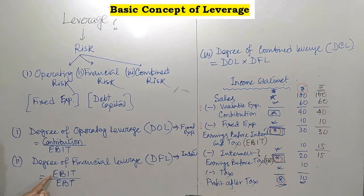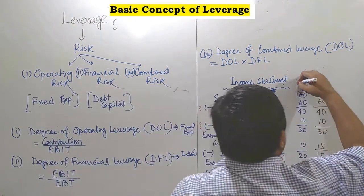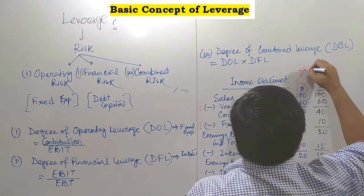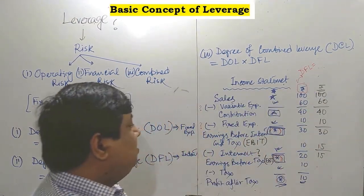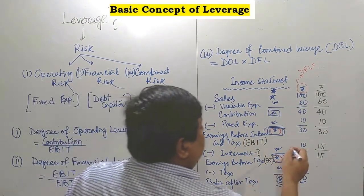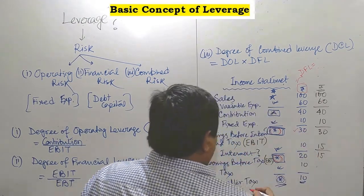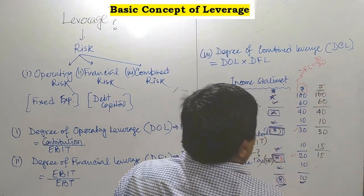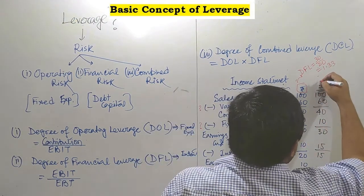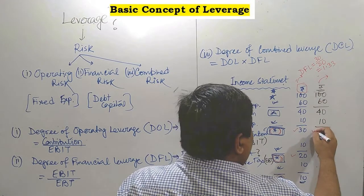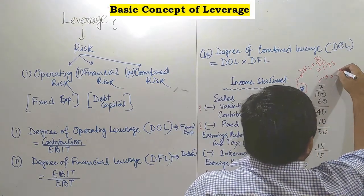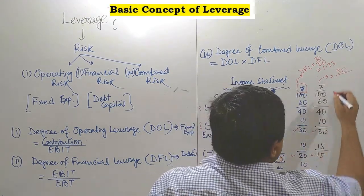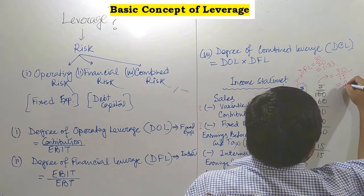For financial leverage, the formula is EBIT by EBT. Let's calculate the degree of financial leverage in both cases. In the first case, your EBIT is 30 and EBT is 20, so it is 30 divided by 20, giving 1.5. In the second case, your EBIT is 30 and EBT is 15, giving exactly 2. So with the same structure and income statement, if you pay more interest, your DFL also goes up.